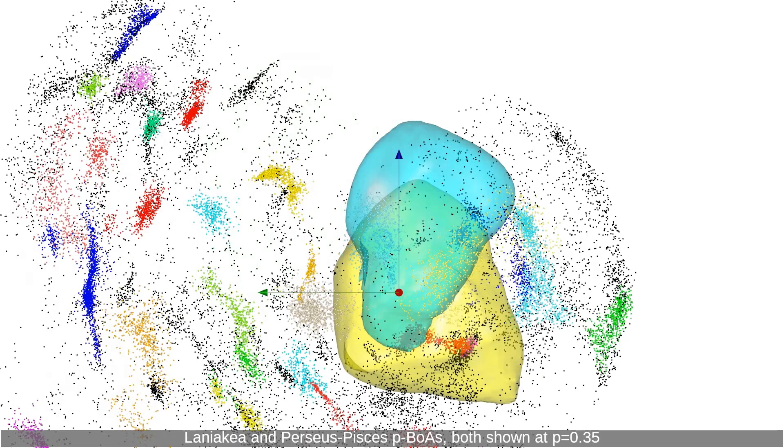Laniakea and Perseus Pisces PBOAs both shown at the P equals 0.5 levels.